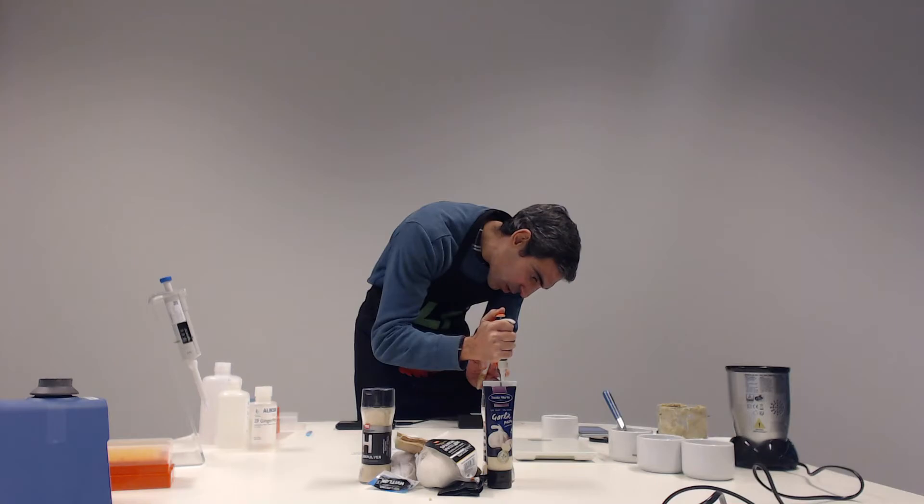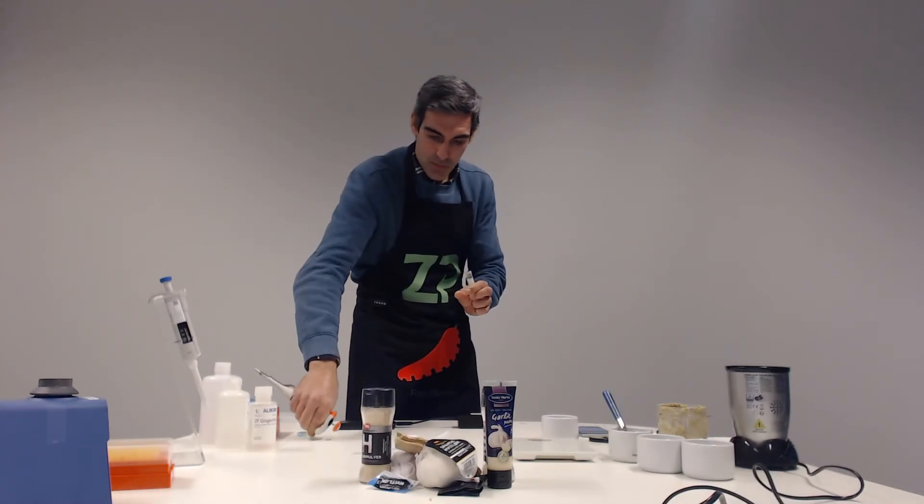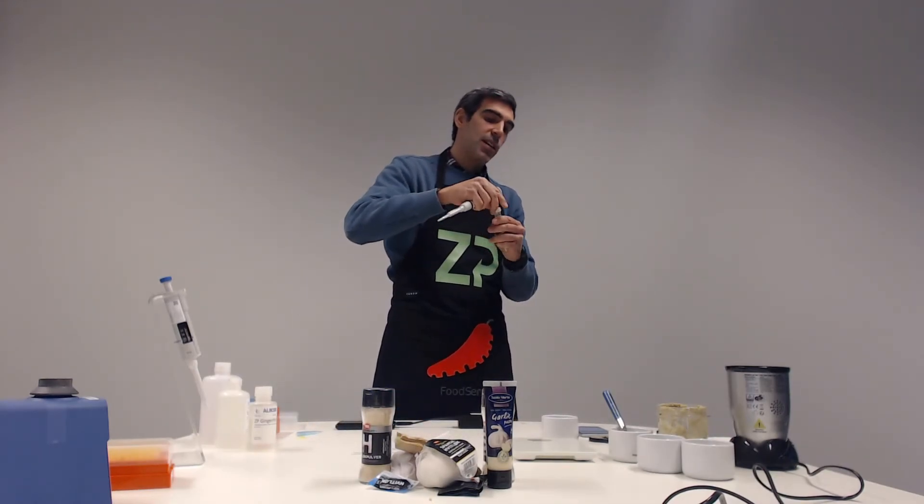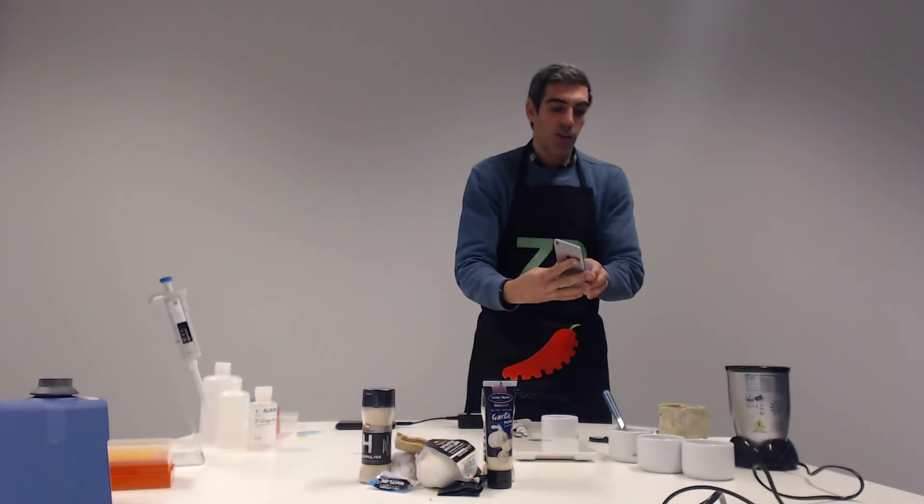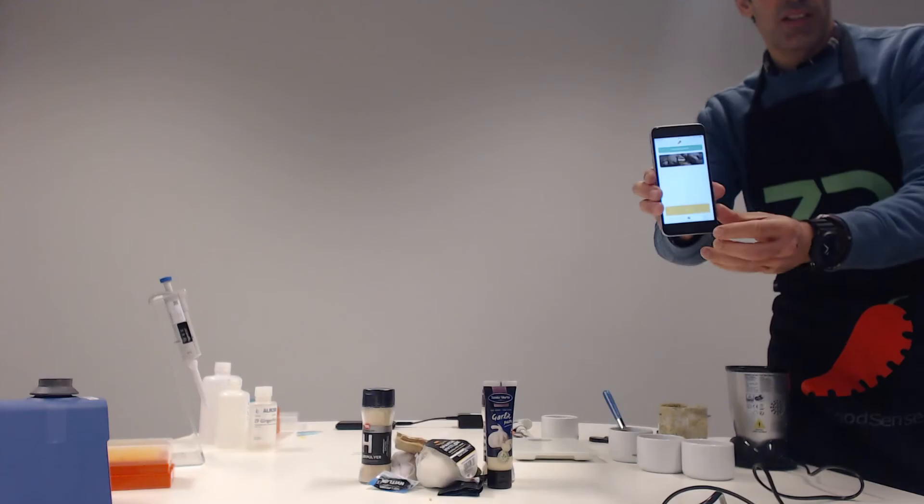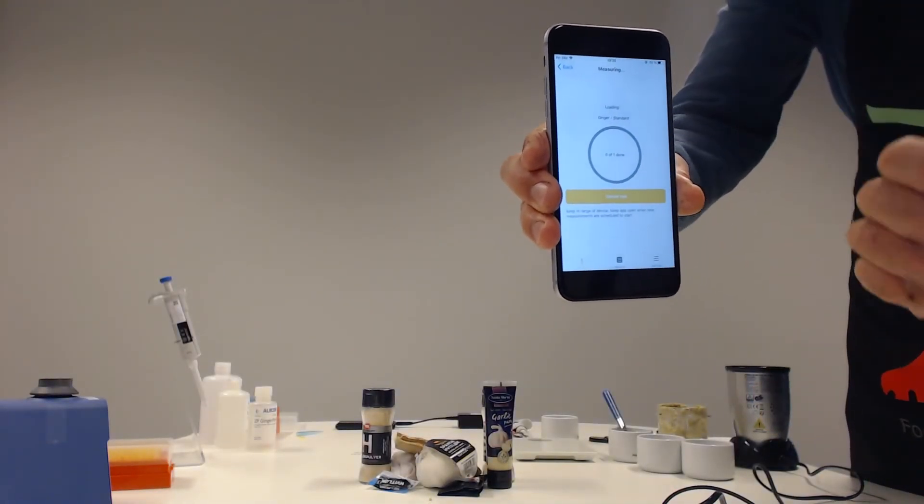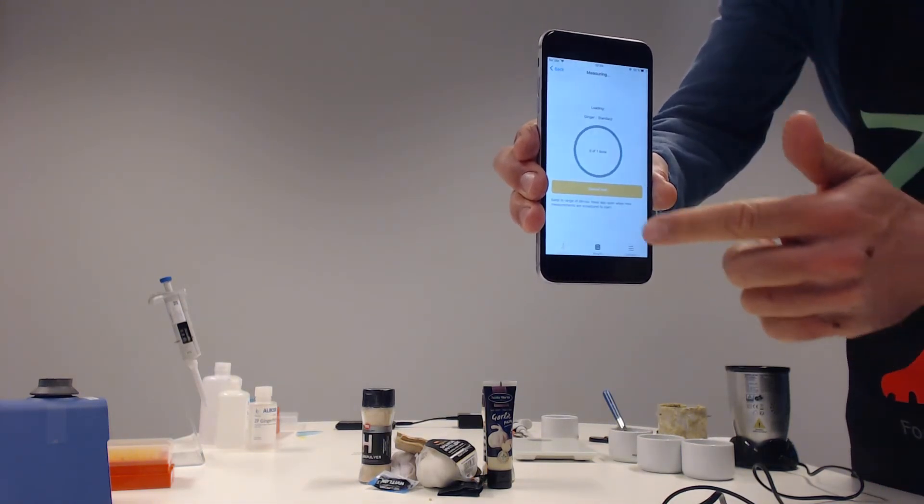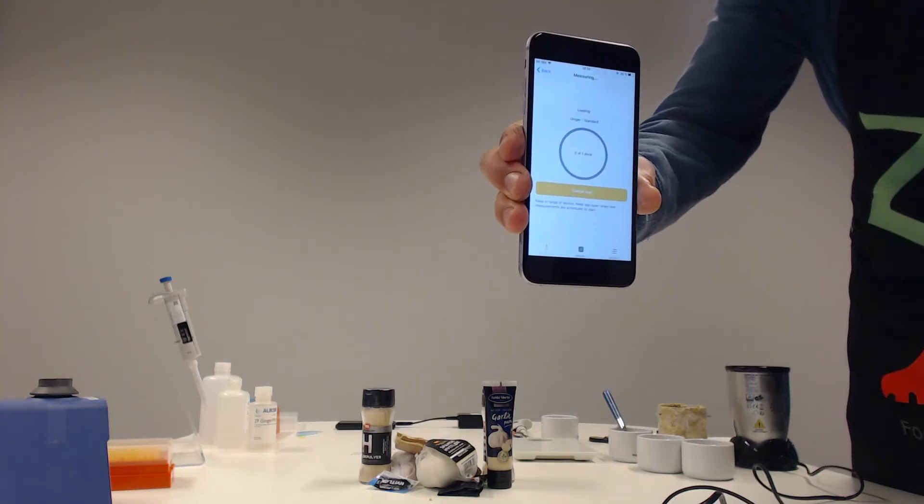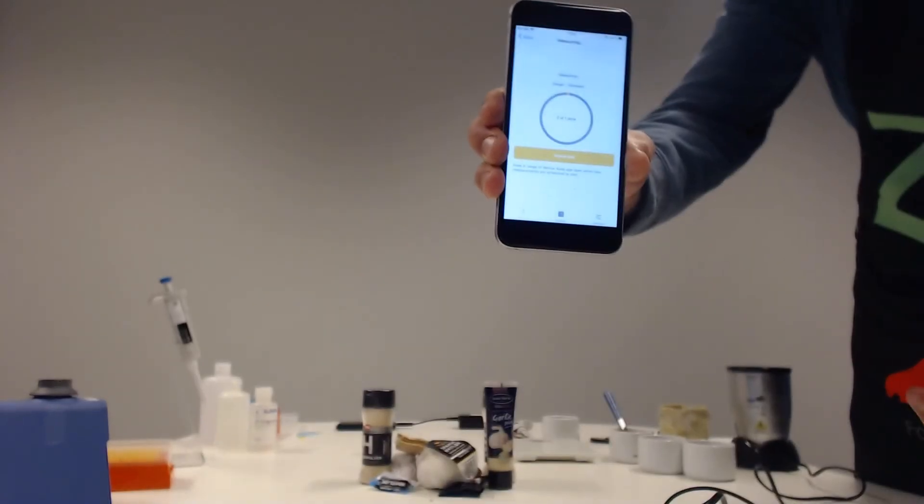And now I will pipette, just covering the electrodes in order to build an electrochemical cell. So I have to cover all three electrodes: working, counter, and reference. And once this is done, on the app, you then press measure. Now we have to wait for the assay to be completed, which means we have to wait for this yellow circle to be fully yellow.